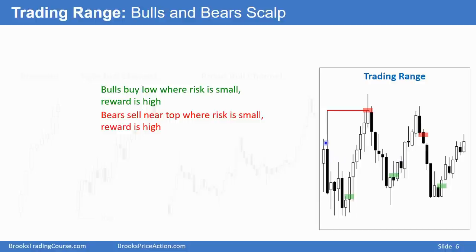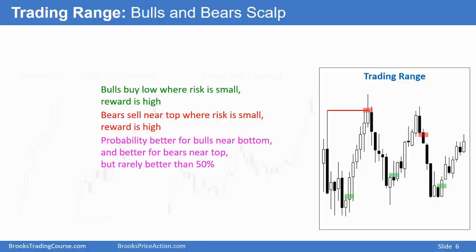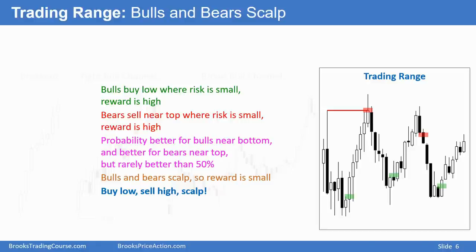Trading range probability is better for the bulls near the bottom and better for the bears selling near the top, but the probability is not really better than 50-50. Again, bulls and bears are both confused, except for one thing: they believe strongly that the market is not going to go very far up or very far down. And because of that, they scalp — buy low, sell high, scalp.